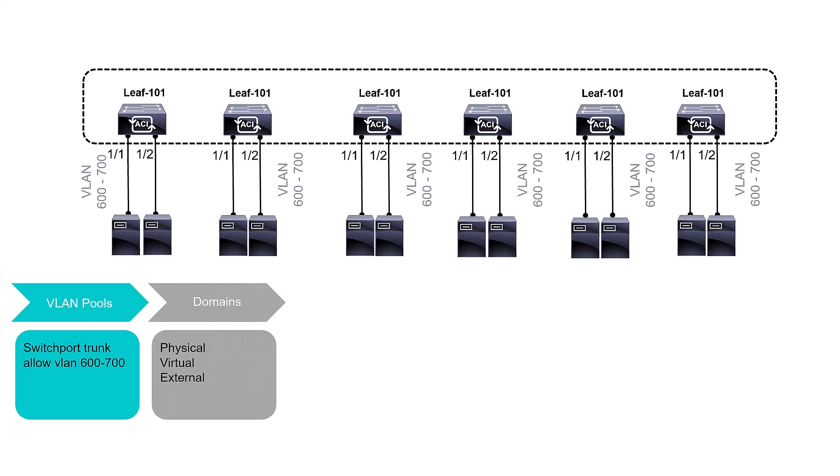These are sequential and hierarchical steps — you nest one step inside another, forming a chain. Assuming this is a physical bare-metal server, you configure the physical domain. You're going to combine the VLAN configuration and nest it into the domain step. That's how each step in the access policy chain works.